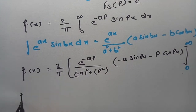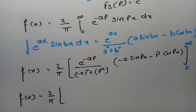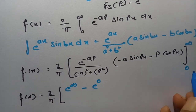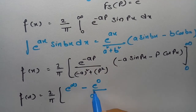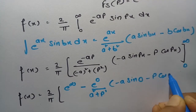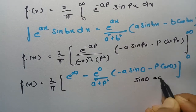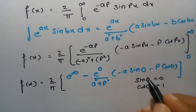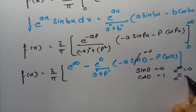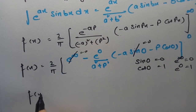Substituting upper limit minus lower limit: at the upper limit, e^(−∞) = 0, so that term vanishes. At the lower limit, e^0 = 1, and sin(0) = 0 and cos(0) = 1. So the lower limit gives: 1/(a² + p²) · (−a·0 − p·1) = −p/(a² + p²).